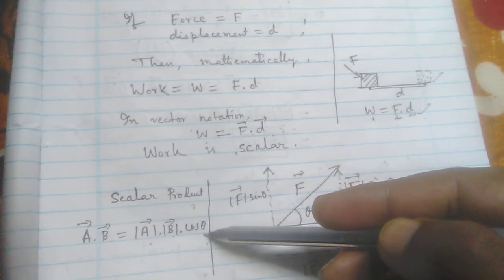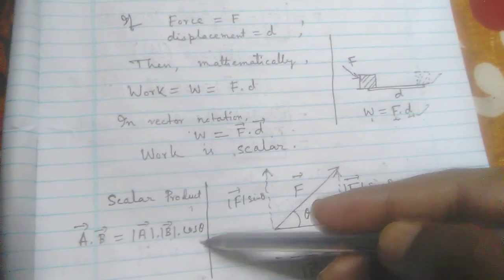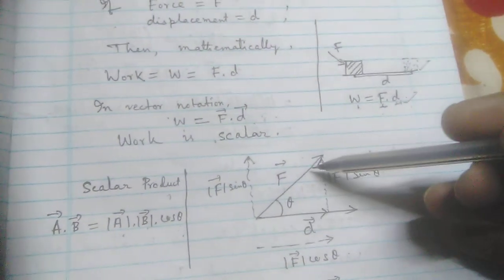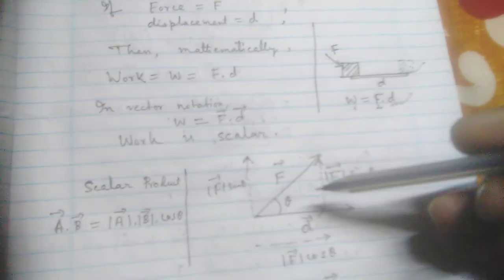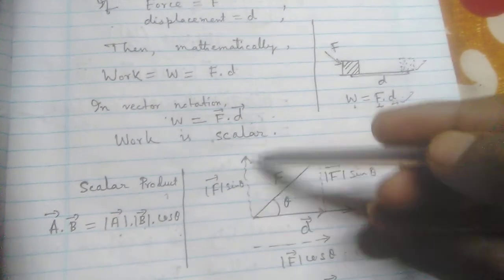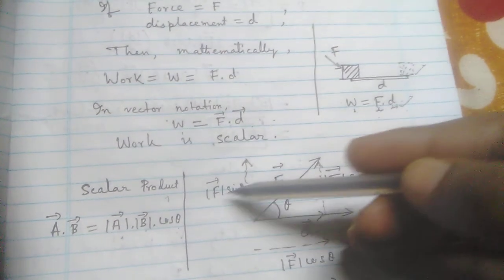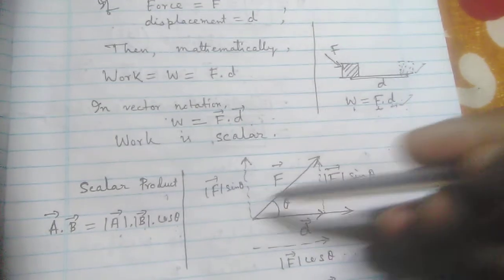the cosine of the angle theta between the vectors. So here the vector F can be divided in two components, one vertically and one horizontally. The vertical component is modulus of F sine theta, and the